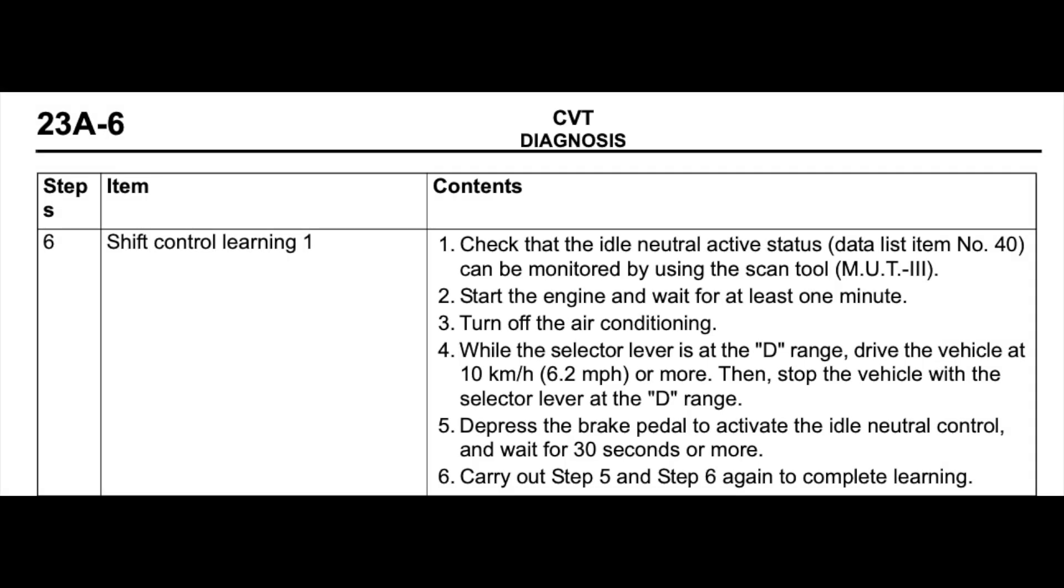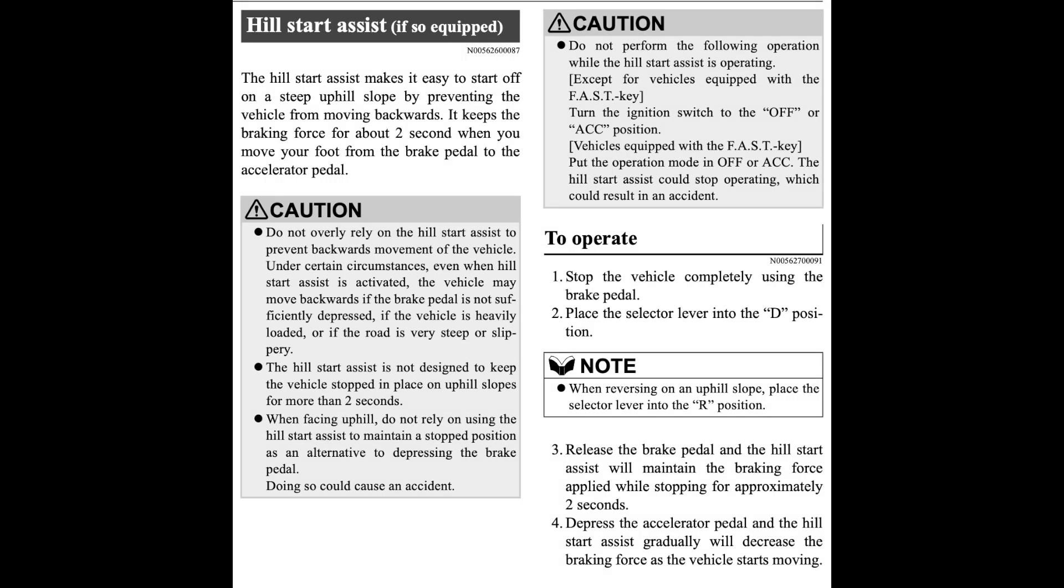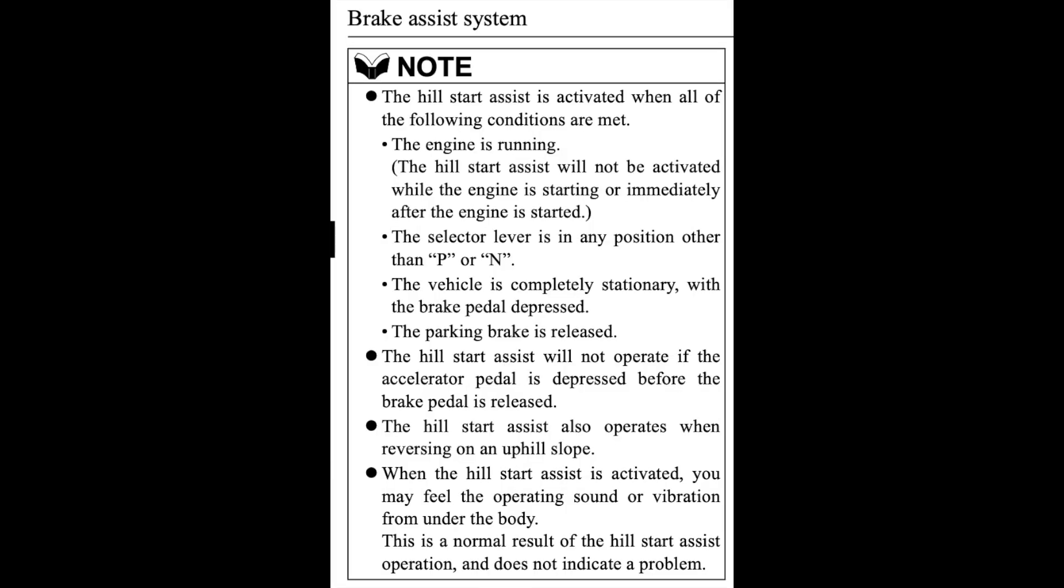That data is likely being used for idle neutral control, which has the transmission automatically shift into neutral when the vehicle is stationary. Stoplight switch data is also used by the shift lock solenoid preventing the vehicle from being shifted out of park without the brake pedal being depressed. Stoplight switch data is also used by the hill start assist system, which prevents the vehicle from rolling back for approximately two seconds after the brake pedal is released.